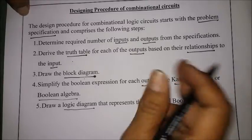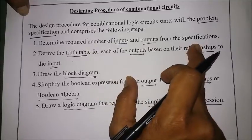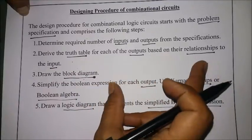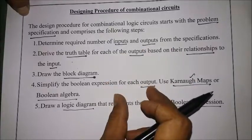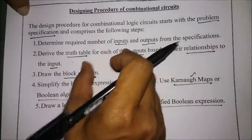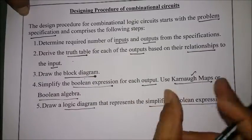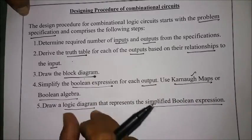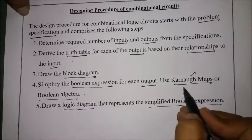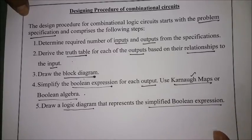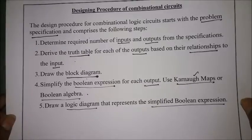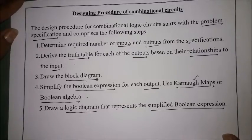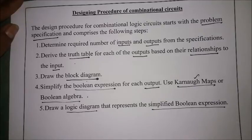To summarize the design flow: first, define the number of inputs and outputs based on specifications; then derive a truth table for each output based on the given relationships; draw a block diagram specifying inputs and outputs; write the boolean expression for each output; simplify using K-maps; and finally, draw the logic diagram representing the simplified boolean expression. This is how we design each combinational circuit to obtain the final logic circuit.